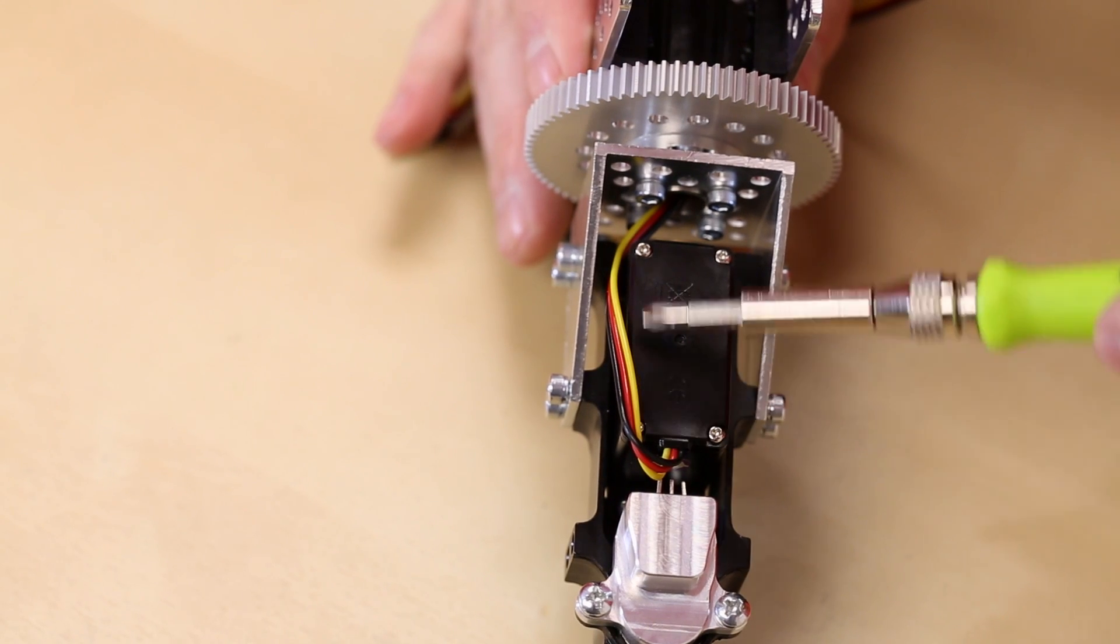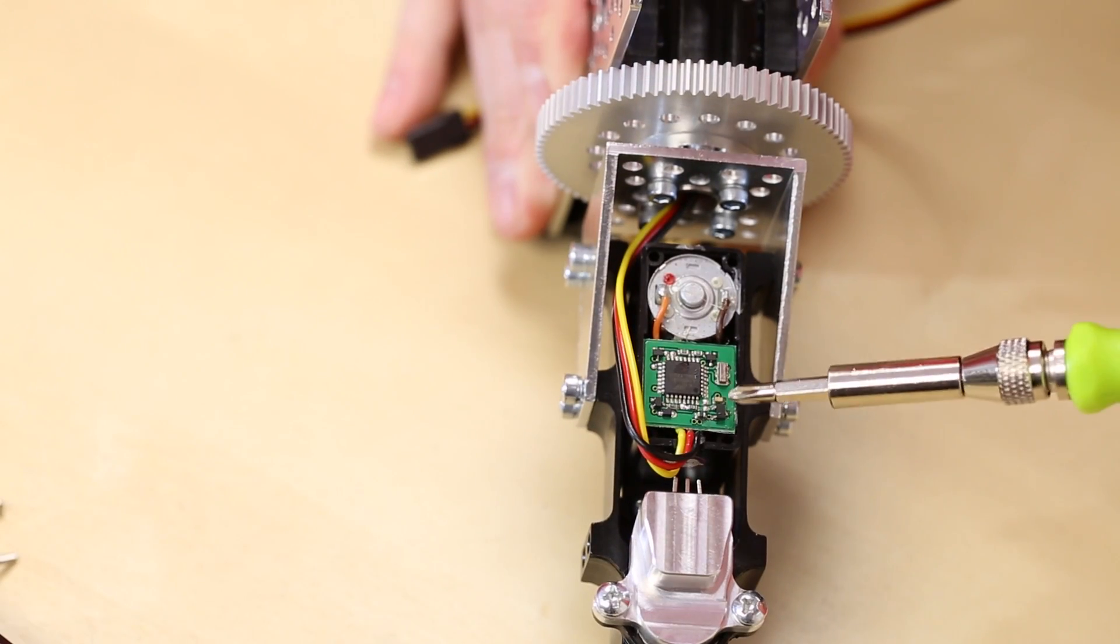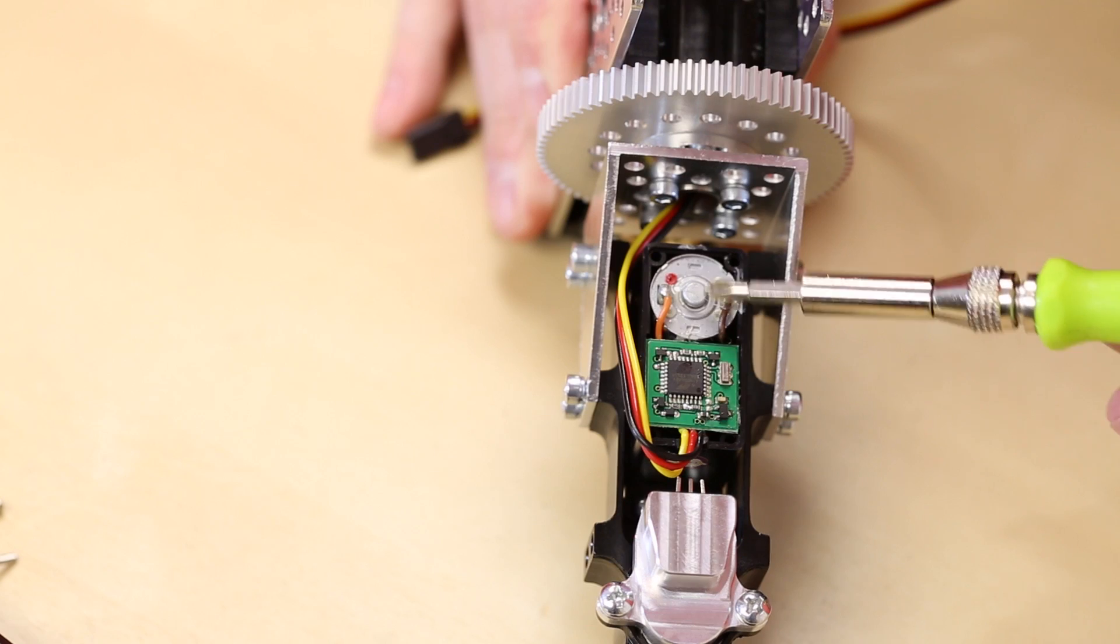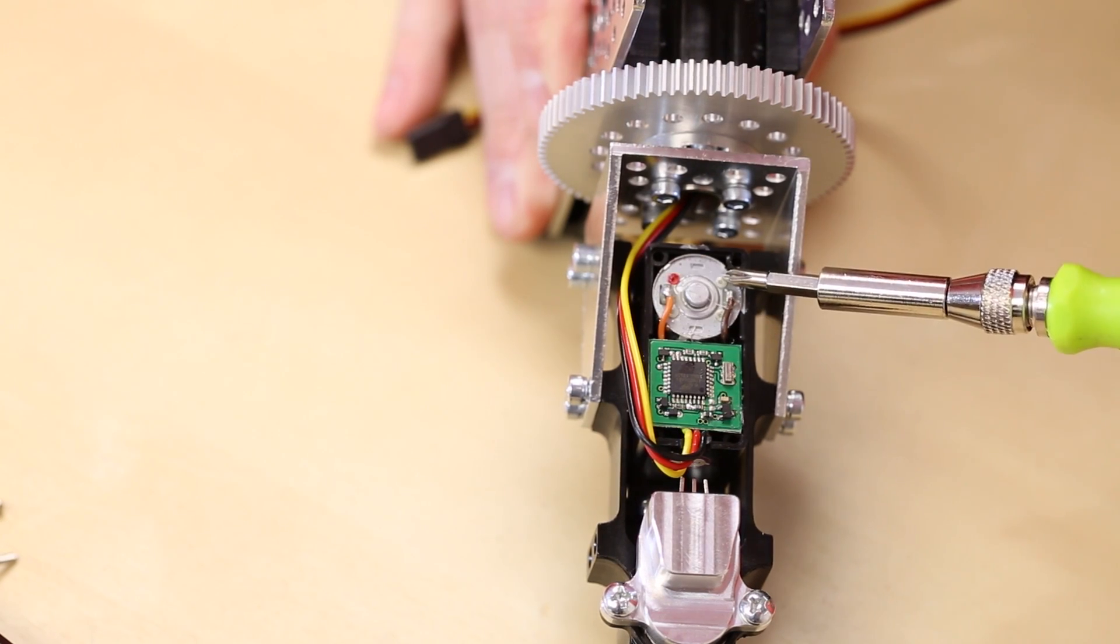We just need to take off this rear cover by removing these four screws. So now we've exposed the main circuit board and also the actual motor here.